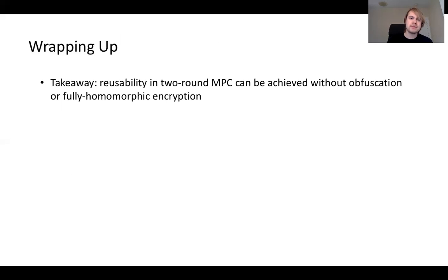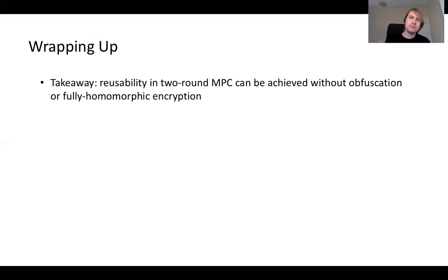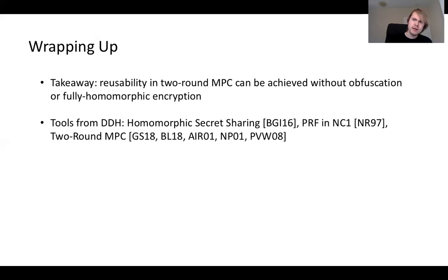That completes the high-level overview of our construction. One of the main takeaways is that our work shows one can achieve reusable two-round MPC without heavy hammers of obfuscation or FHE, which prior to our work were the only two primitives known to imply reusable two-round MPC. To recap the tools we used — all known from DDH: HSS, a PRF in NC1, and vanilla two-round MPC.